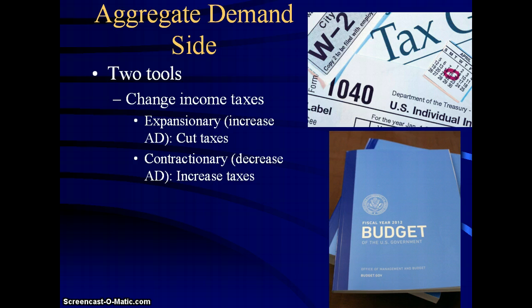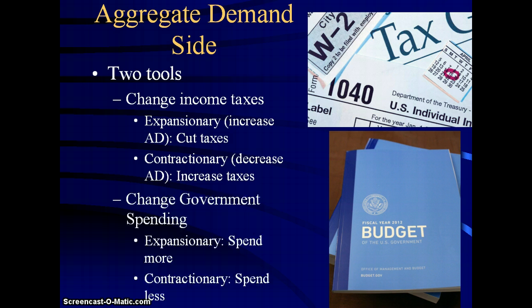If you want to expand the economy, cut taxes. If you want to contract the economy, increase taxes. The other tool to use for fiscal policy is government spending - you can change that. If you're expansionary, you would spend more. If you're contractionary, you would spend less. To the right you see President Obama's budget for 2012 that has just been proposed to Congress. The key point really is what are the two things we need to know: we have two tools - changing taxes and changing government spending.